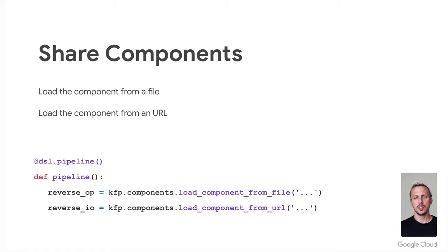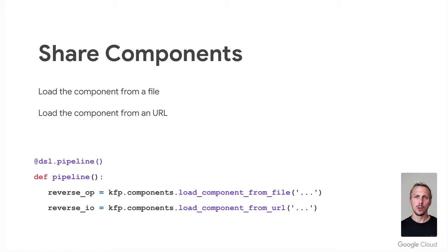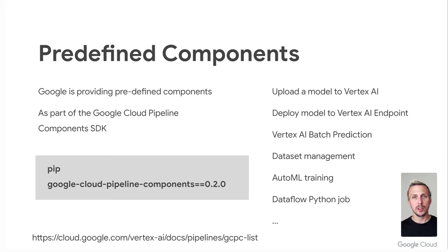We can use the specification to load a component as part of our pipeline. Kubeflow Pipeline provides two ways to load a specification: from file and from URL. This makes it very easy to reuse pipeline components and share them between projects or even teams. Components, for example, could be uploaded to Google's AI Hub, and your teams can search and reuse them. Google also provides predefined and ready-to-use components you can install via pip, which integrate well with other Google products like AutoML, Vertex AI Endpoints, and BigQuery.